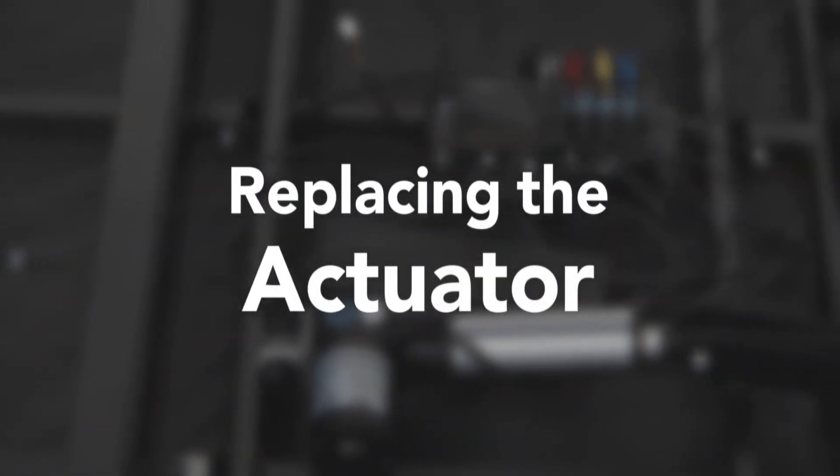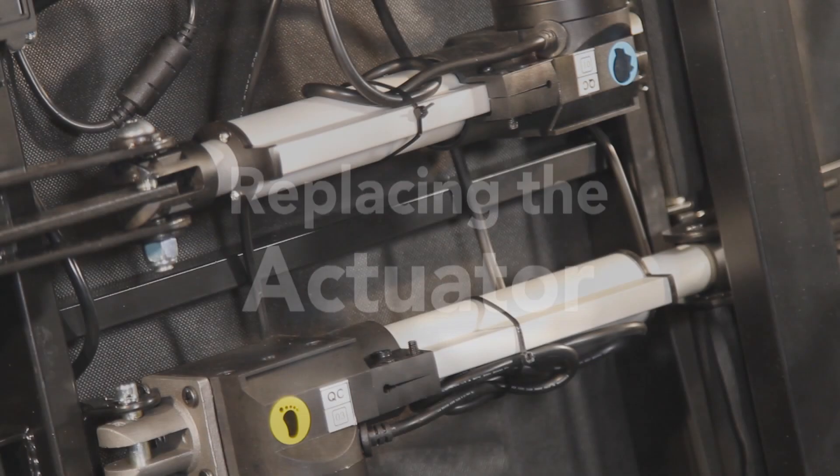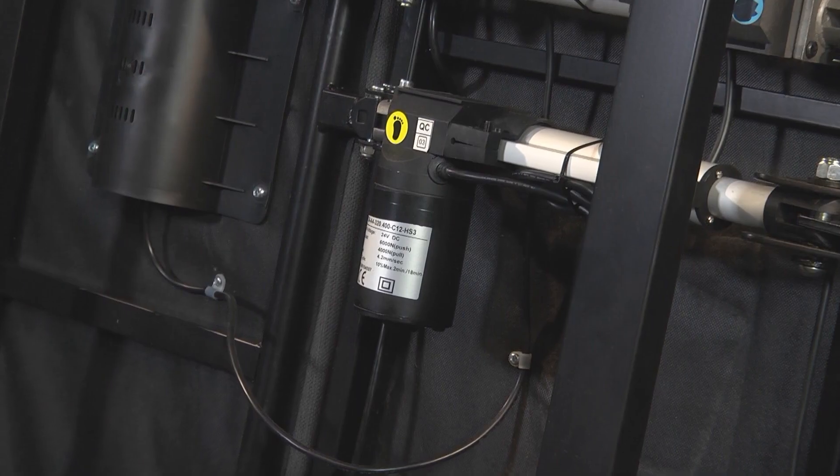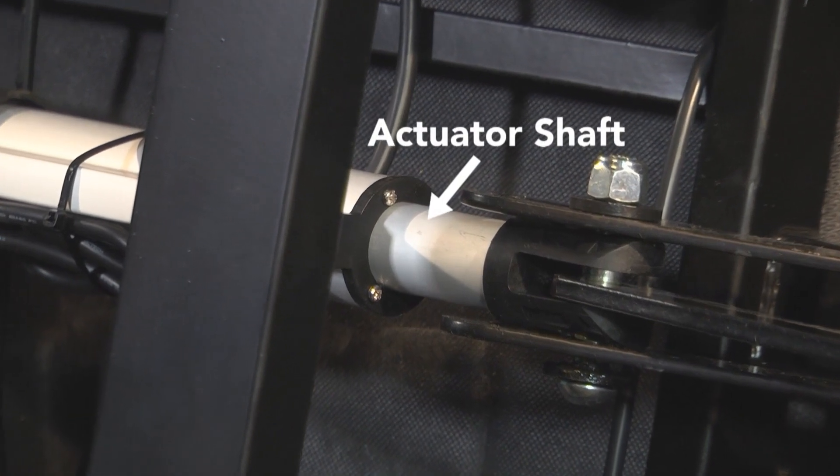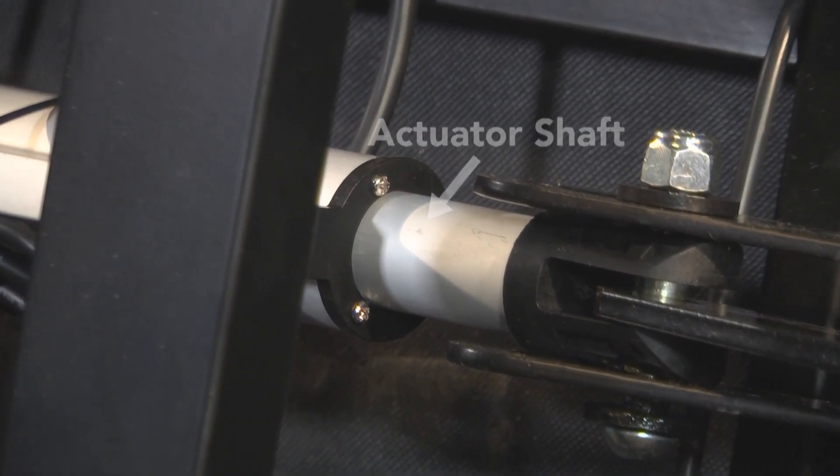This video will show you how to replace the actuator on your adjustable base. This is an actuator. It's the device that lifts or lowers a section of the adjustable base. It has the electric motor on one end and the actuator shaft which moves in and out at the other end.